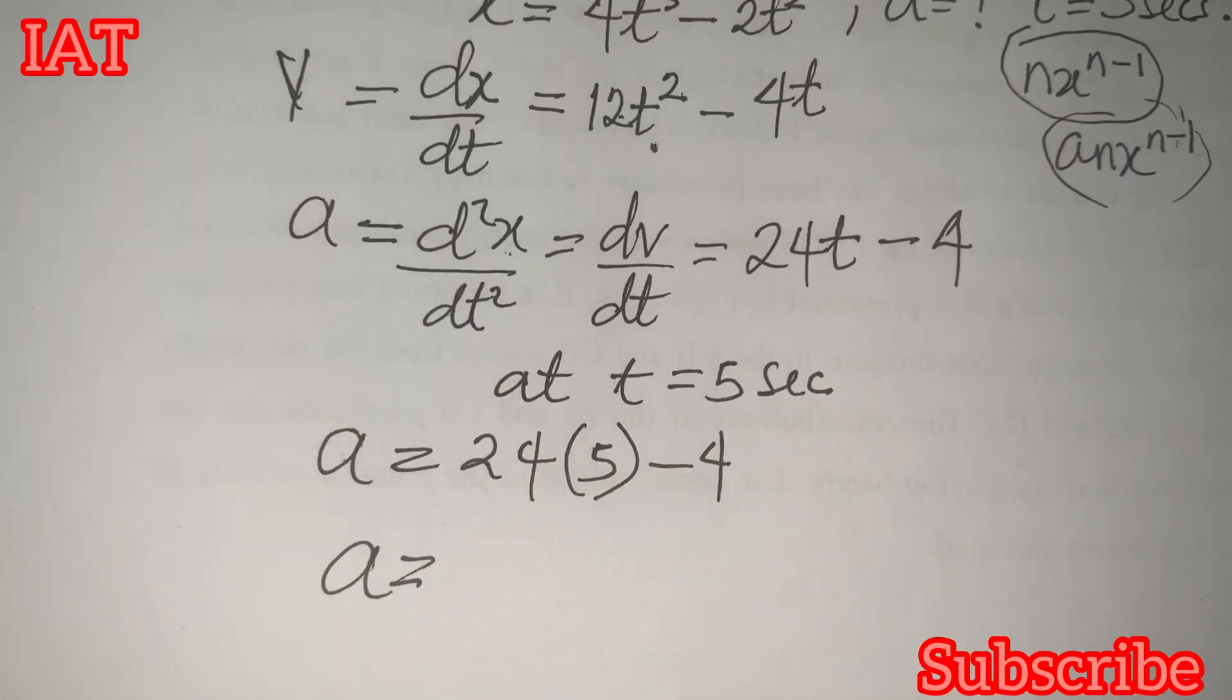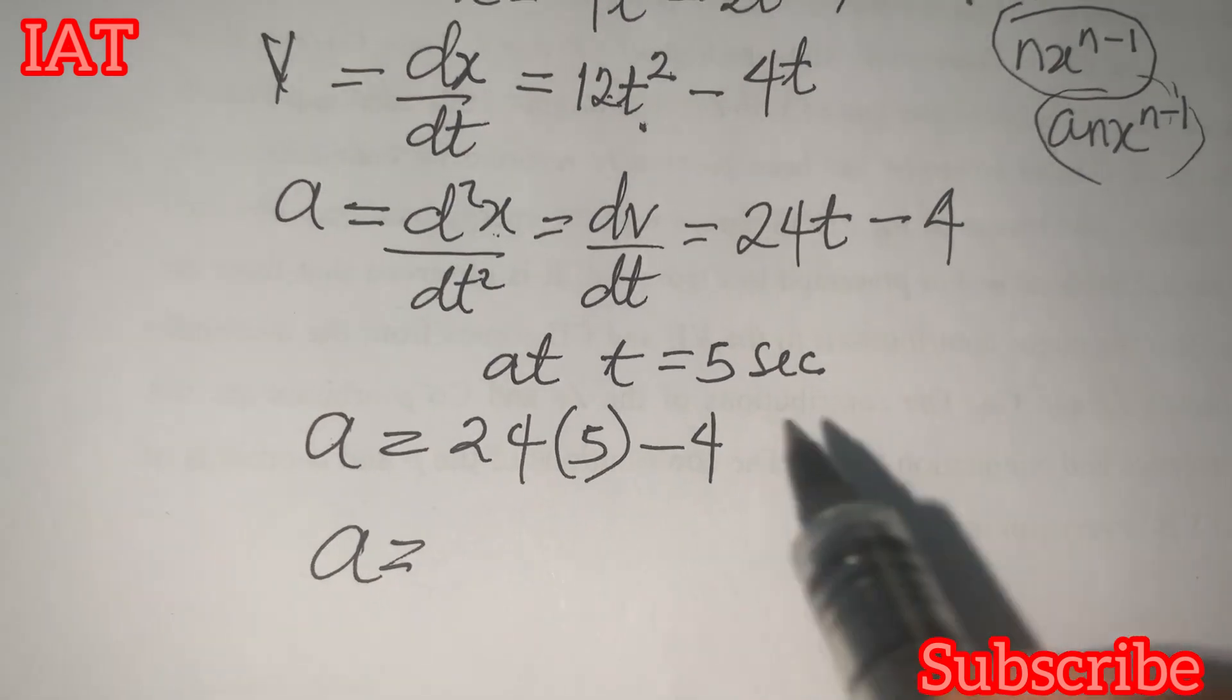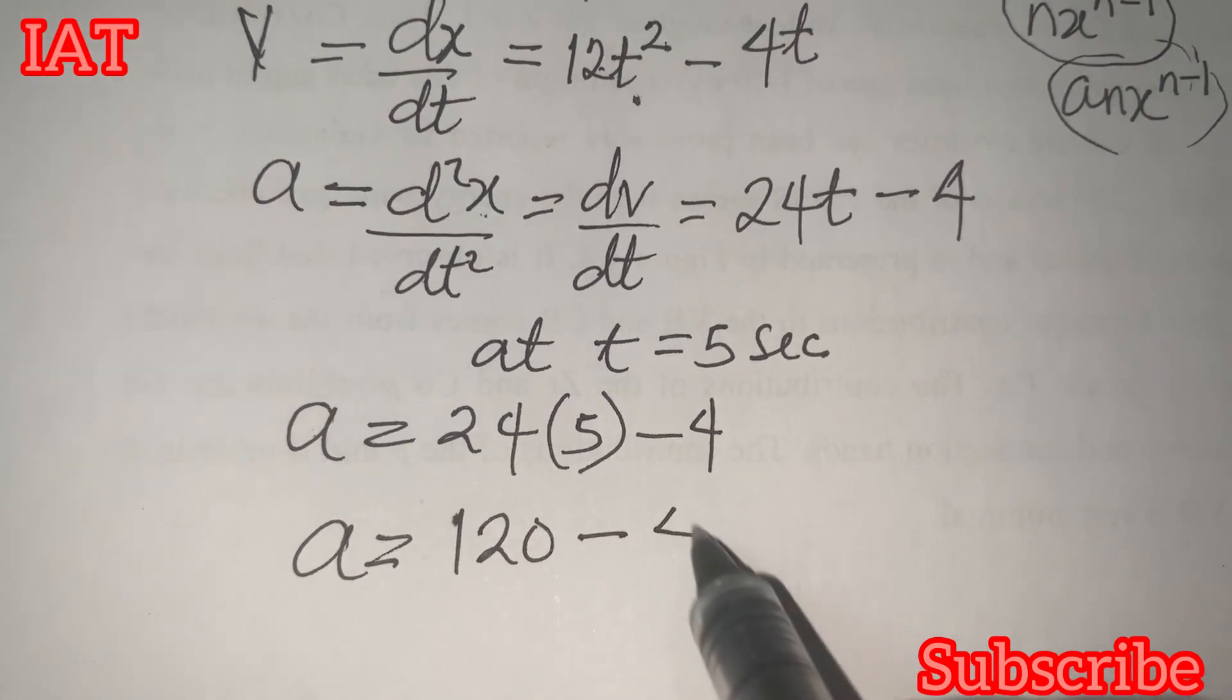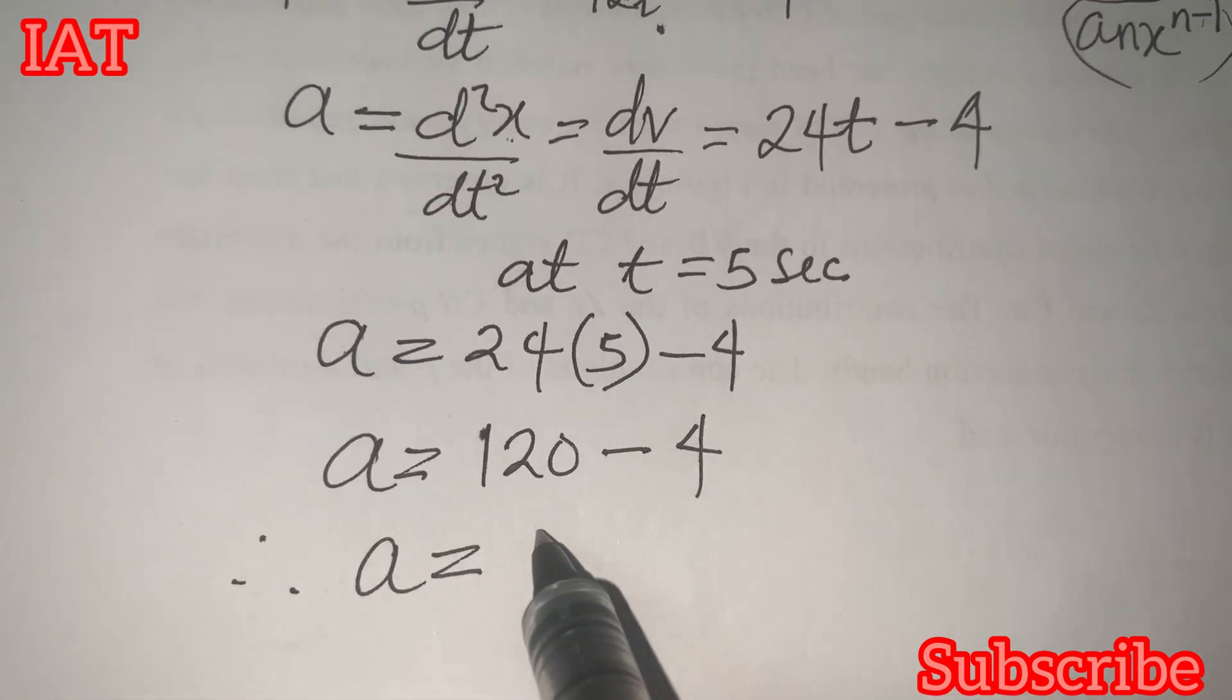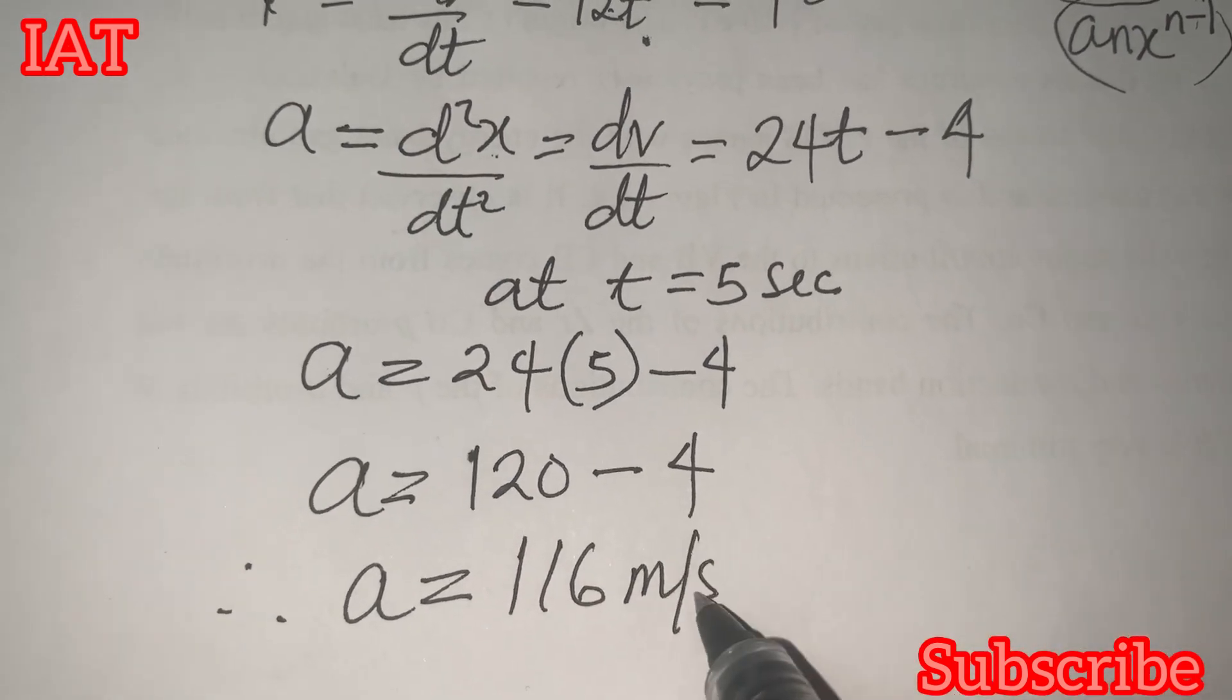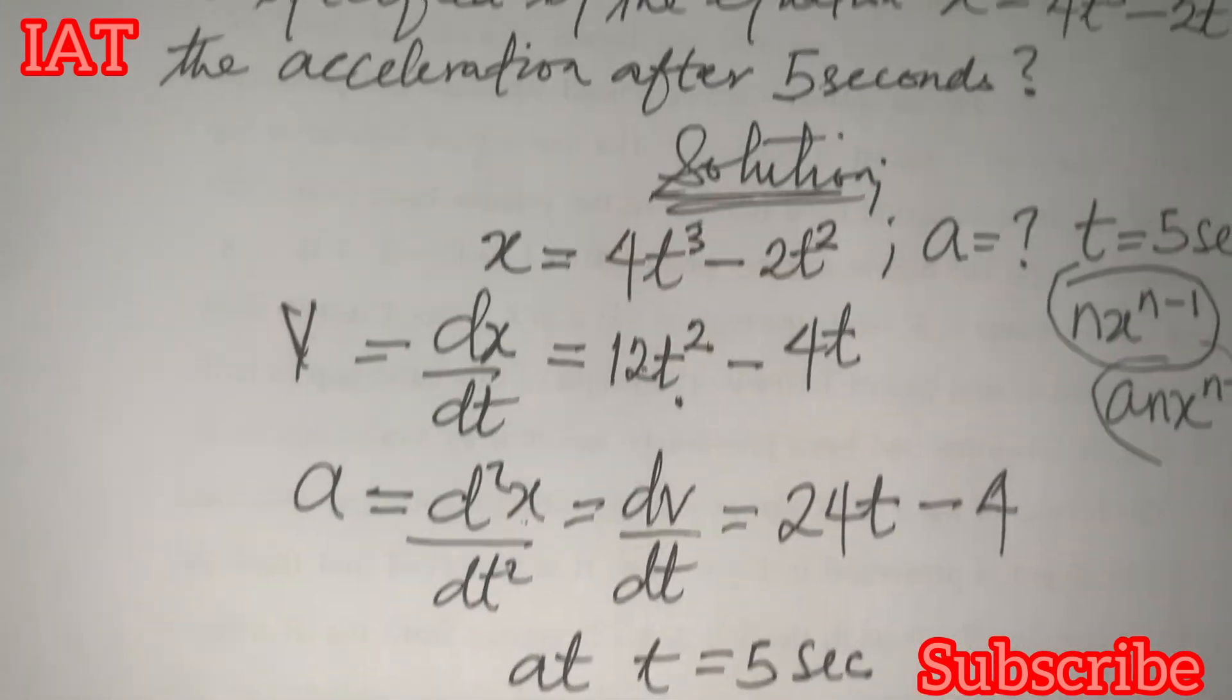the result you will have is 24 times 5 is 120. And 120 minus 4, we give 116. And the unit for acceleration is meter per second squared. And this is the solution for this problem.